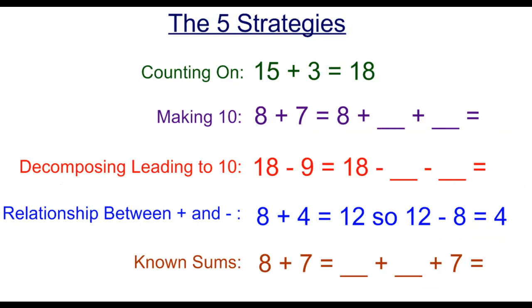The first of the five strategies is counting on. I like to think of this as students counting on their fingers. For example, 15 plus 3 is 15 as a starting point, 16, 17, 18, the answer is 18.